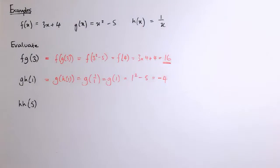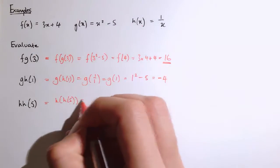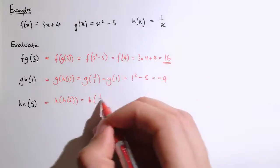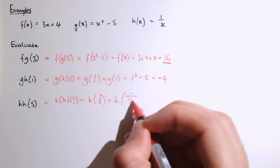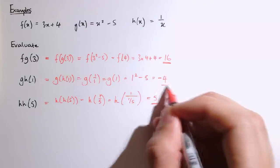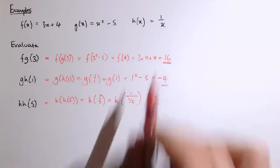And then h of h of 5, well, nothing different here, it's just applying the same function twice, so actually this is h of h of 5, and h of 5 is 1 over 5, so that's h of 1 fifth, and h of 1 fifth is then 1 over 1 fifth, and the reciprocal of 1 fifth brings us back to 5. That won't always happen with composition of functions, with the same function applied twice, but here we have actually just got back to the same value we started with, which is a special property of that reciprocal function.